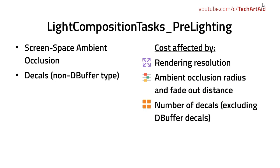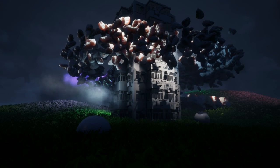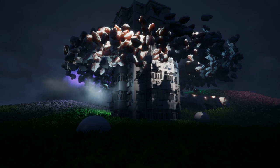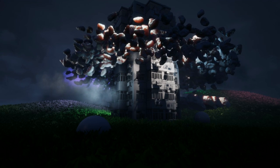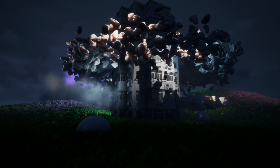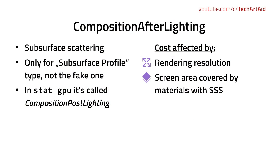The pass also has to do with decals. The greater the number of decals — standard ones, not dbuffer decals — the longer it takes to compute. Composition After Lighting is responsible only for subsurface scattering in Unreal 4.16. In StatGPU it's called Composition Post Lighting. This is for the newer kind of subsurface scattering available in Unreal — not the basic one, but the one called Subsurface Profile. To reduce the cost of this pass, you have to limit the amount of objects and their screen space size that use subsurface scattering, or use the fake one, disable it, especially with level of details.